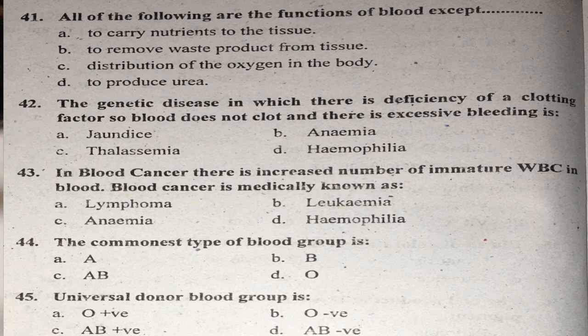Question forty-one: All of the following are functions of blood except which one? Functions include carrying nutrients, removing waste products, and carrying oxygen. The exception is producing urea — blood does not produce urea. Right answer is D.